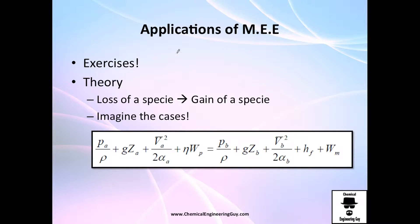Good guys, so let's do some applications of the mechanical energy equation. It's time to do exercises, but we're going to play the theory before. So if we lose one species, I want you to have this very clear. If we lose one species, it's because another one is gaining. So for example, if you lose this pressure, you either gain it here or lose it here or even gain this.